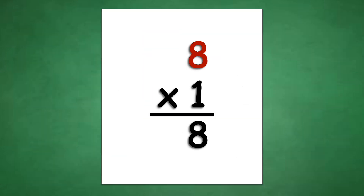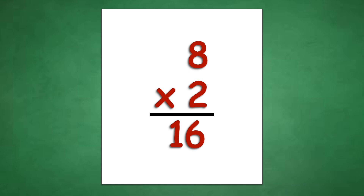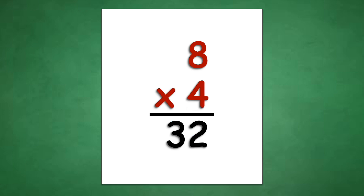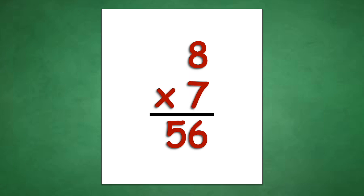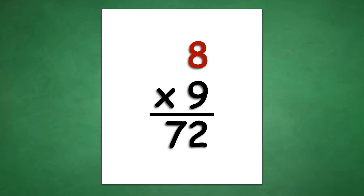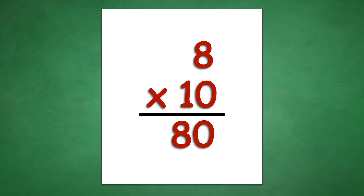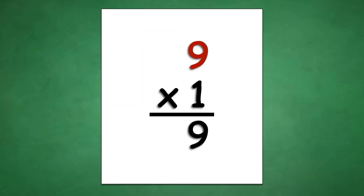Table of 8: 8 times 5 equals 40, 8 times 6 equals 48, 8 times 7 equals 56, 8 times 8 equals 64, 8 times 9 equals 72, 8 times 10 equals 80.